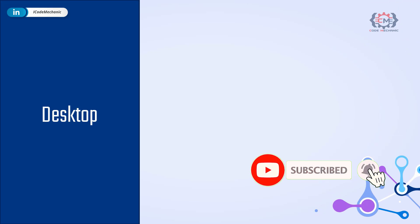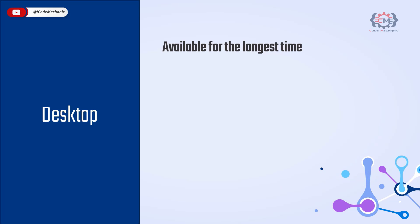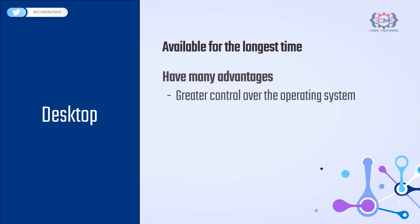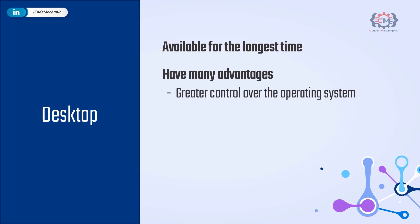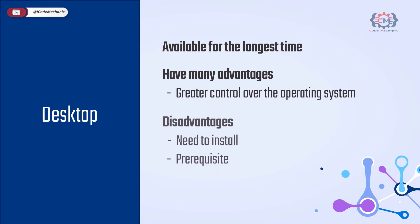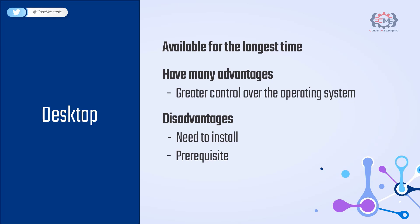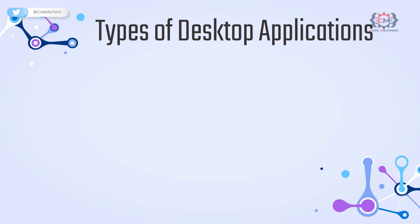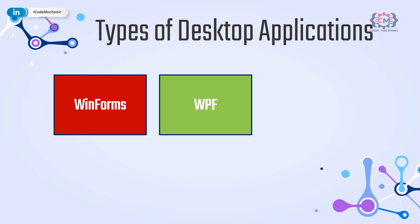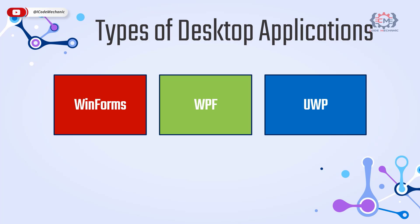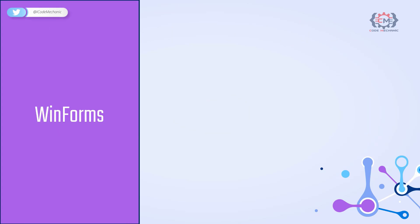The first type of application is desktop applications, which have been available the longest. Desktop applications have been around way before even .NET was born. They have many advantages including greater control over the operating system, but there are certain disadvantages — typically you need to install them and certain prerequisites must be met. In .NET 6, you can create desktop applications in several ways including Windows Forms (WinForms), Windows Presentation Foundation (WPF), and Universal Windows Platform (UWP).